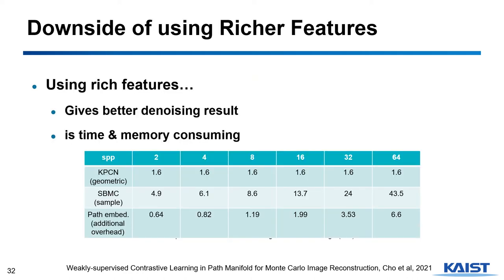We've seen three denoising networks, each using one of the auxiliary features from geometric to sample and path features. Using deeper features results in better denoising, but also consumes more time and memory. The table shows the time required to denoise a full HD image, and we can see that using sample and path features requires additional time compared to using geometric information. Currently, it is hard to utilize sample and path features for real-time denoising in path tracing.